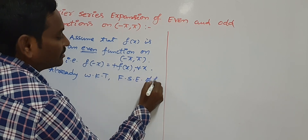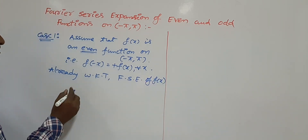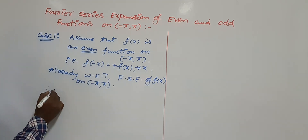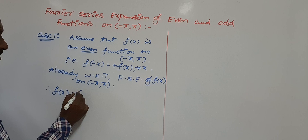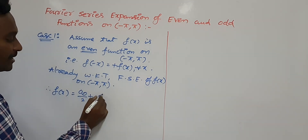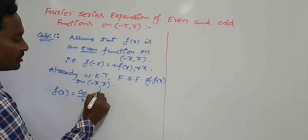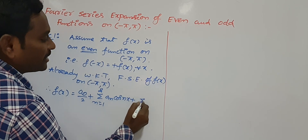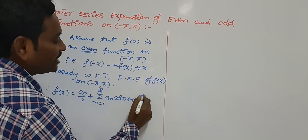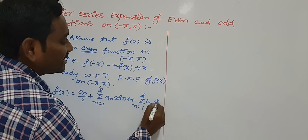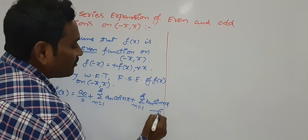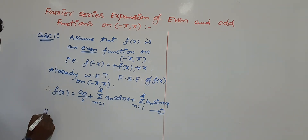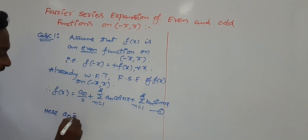Already we know the general Fourier series expansion of f(x) on the interval (-π, +π). The Fourier series is: f(x) = a₀/2 + summation n=1 to infinity of aₙ·cos(nx) + summation n=1 to infinity of bₙ·sin(nx). Call this equation 1.